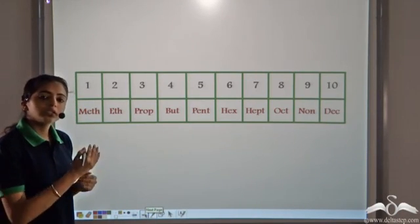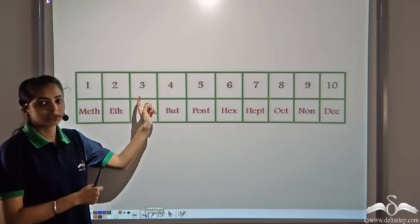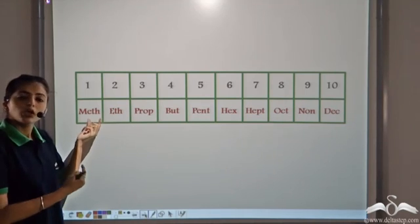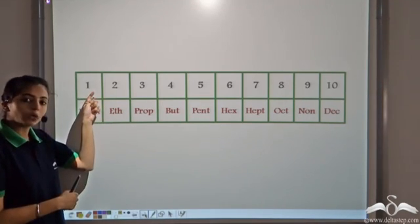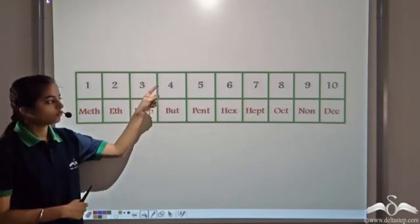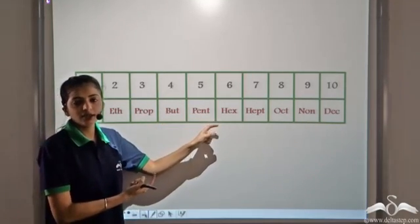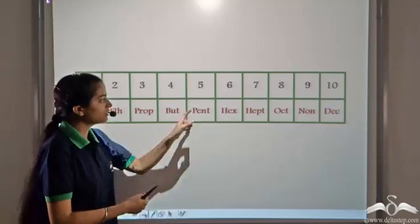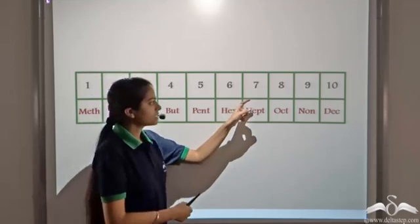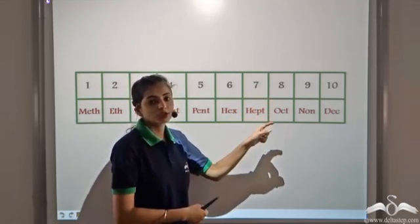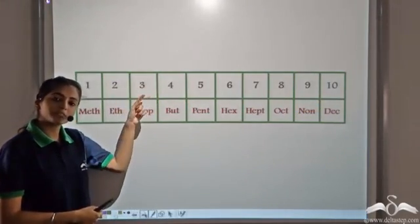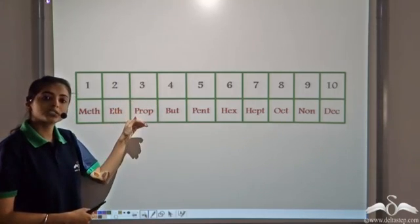In an organic compound, the name is derived by the number of carbon atoms it has. One carbon atom means 'meth', two means 'eth', three means 'prop', four is 'but', and from five onwards: five is 'pent', six is 'hex', seven is 'hept', eight is 'oct', nine is 'non', and ten is 'dec'.